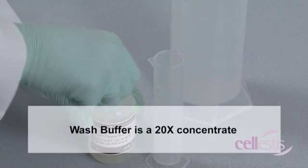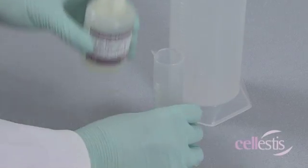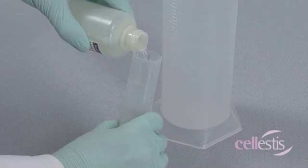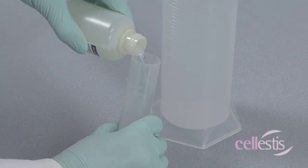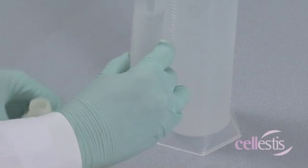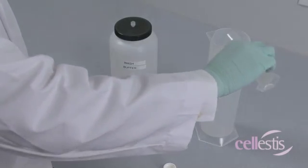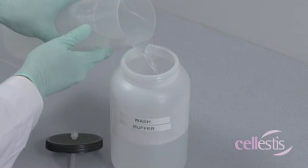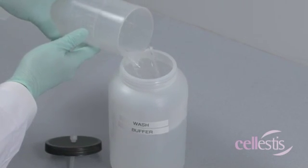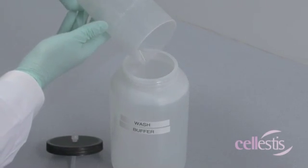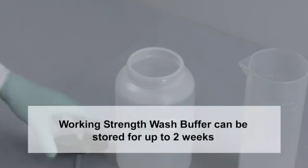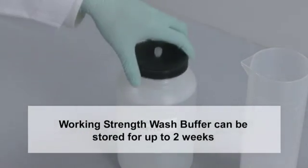The wash buffer is a 20-time concentrate. It should be prepared by diluting one part of wash buffer concentrate with 19 parts distilled water and mixing thoroughly. Enough concentrate has been provided to allow for one liter of working strength buffer per ELISA plate. Once diluted, the working strength wash buffer can be stored at room temperature for up to two weeks.